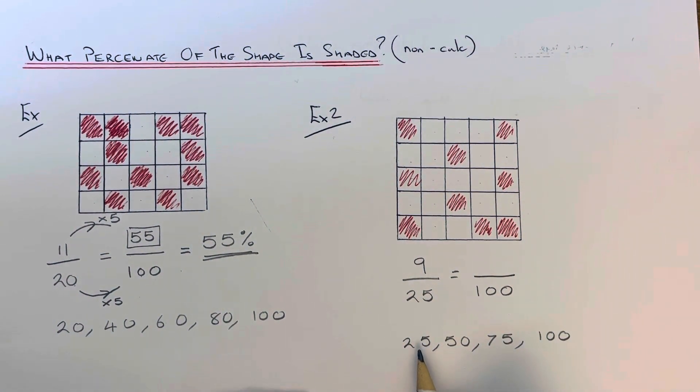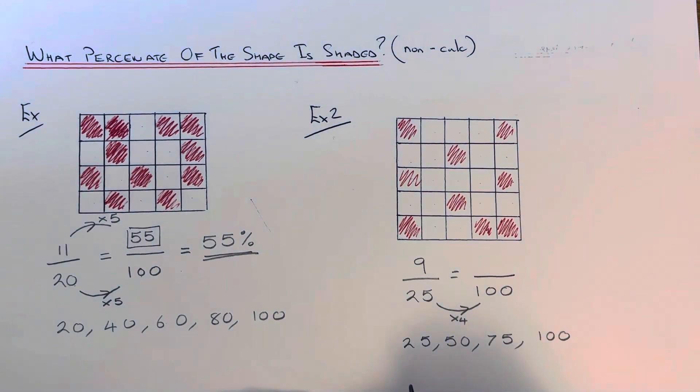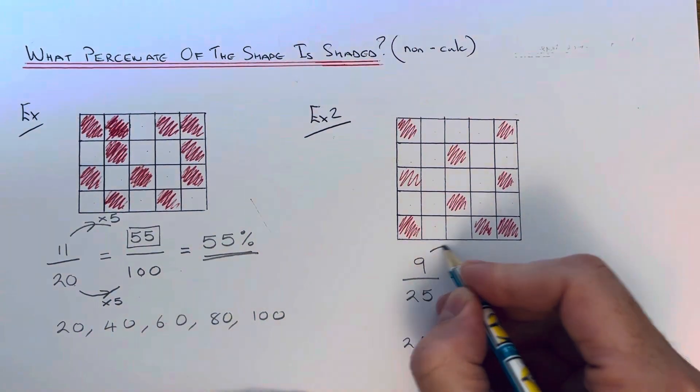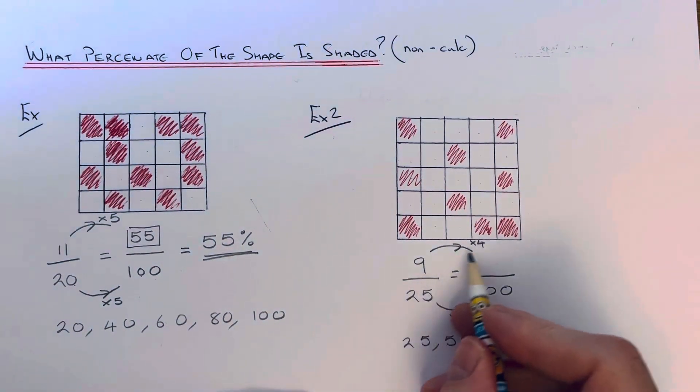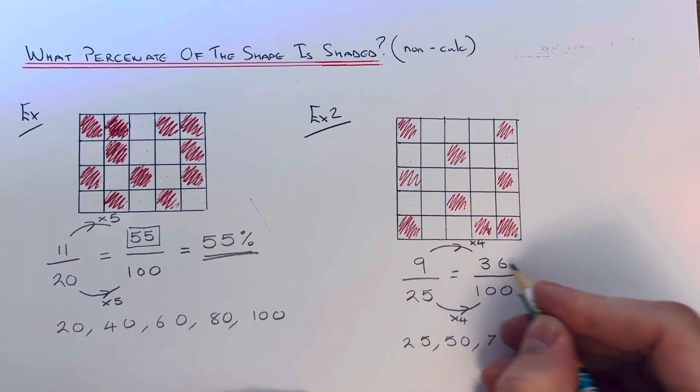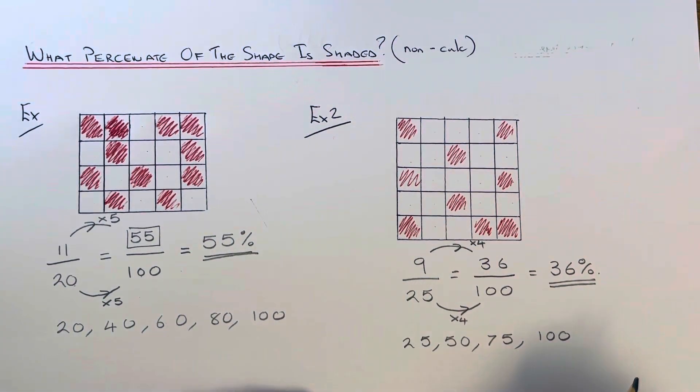So as you can see, it goes 1, 2, 3, 4 times. So if I've multiplied the bottom number by 4, I have to multiply the top number by 4 as well. So 9 times 4 is 36. So 36% of our shape is shaded.